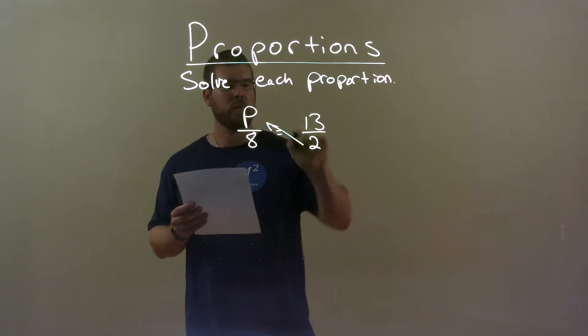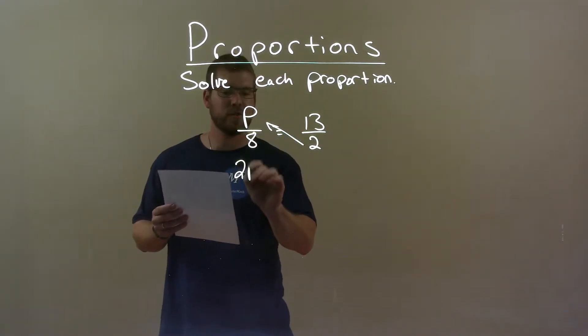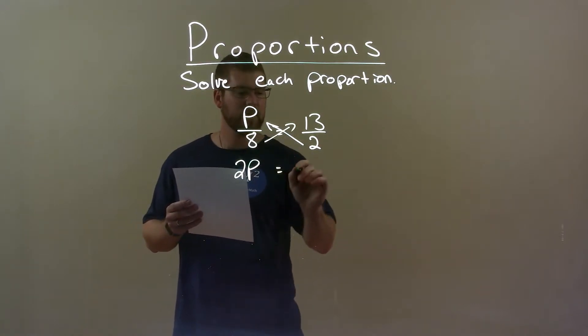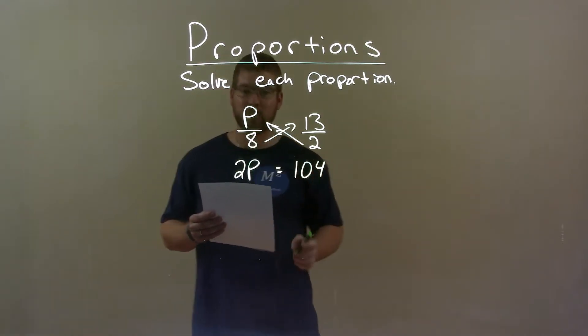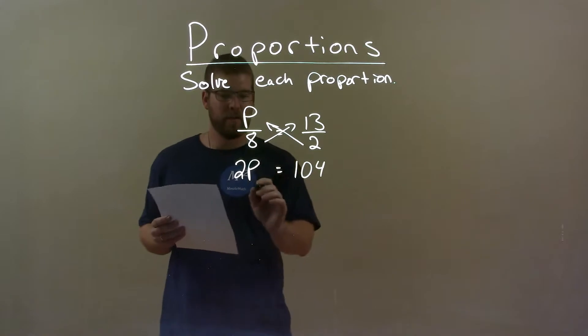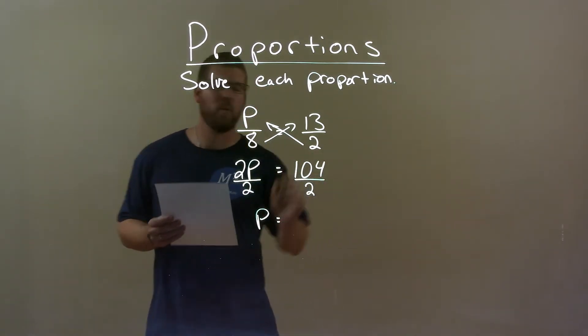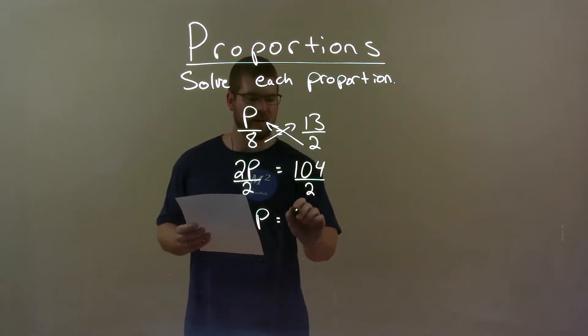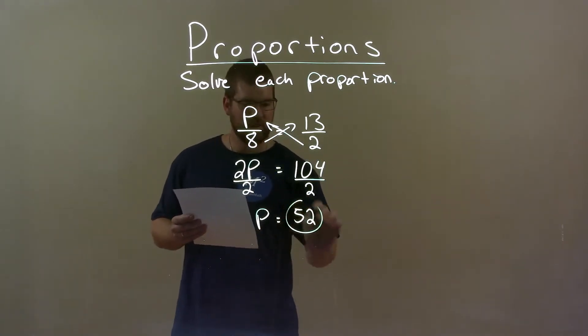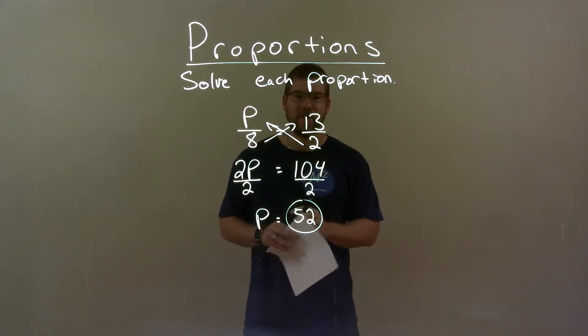First thing I want to cross-multiply. P times 2 is 2P and 8 times 13 is 104. Okay, now from there to get P by itself, I divide both sides by 2. P is here by itself. 104 divided by 2 is 52.